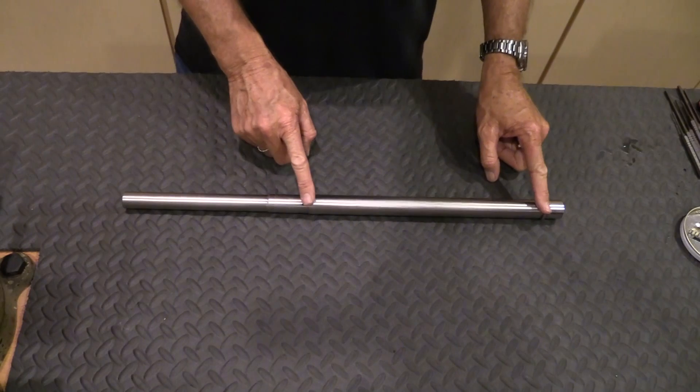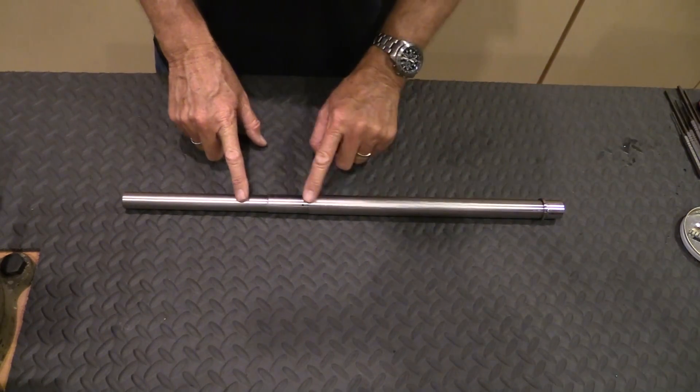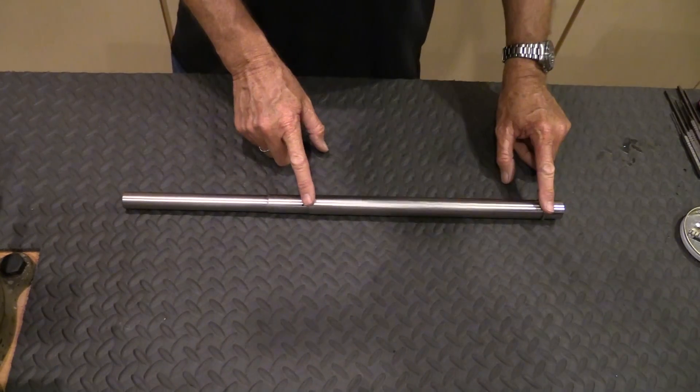This section here of the barrel is 1 inch diameter. The next section here is about 12 inches long.